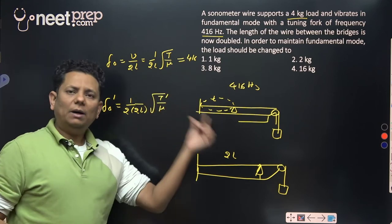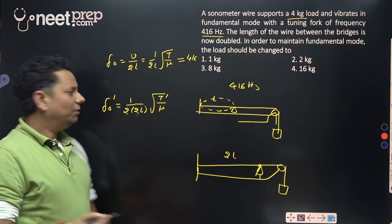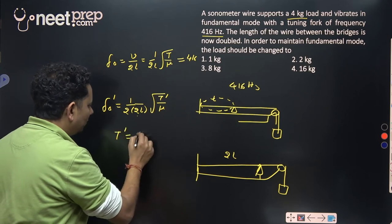Now if we have frequency 416 and length doubled, then here tension is four times. So T dash will be equal to 4T.